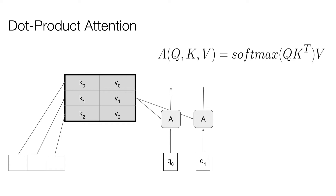K doesn't have to be square — the dimension of the keys just has to match the dimension of Q. We're not constraining them to norm one, so the norms can be learned. If the model wants to be very discrete, putting all the weight on one key, the norms of the key and query vectors can grow through training.